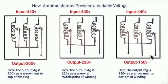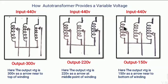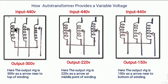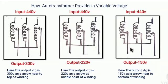From these three diagrams we conclude that the input voltage is 440V in all cases, while the output voltage is 300V in the first, 220V in the second, and 150V in the third. The output voltage decreases as the movable contact moves toward the lower points, because the number of turns consumed by the contact reduces — as the number of turns decreases, the output voltage also decreases. Thank you.